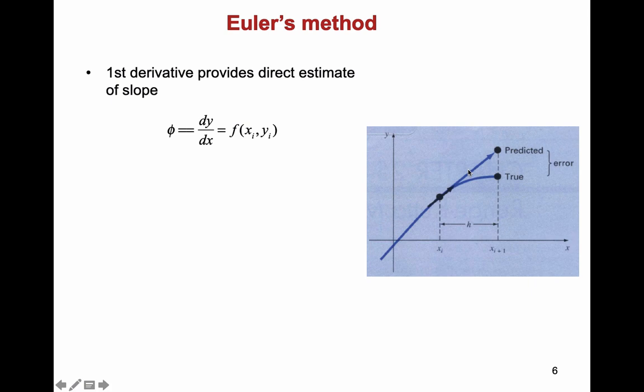And what happens to the error if I basically halve my step h? So my h is twice smaller. What happens to the error between the predicted value and the true value? It gets smaller as well, right? So with the smaller step, with the finer step, I'm going to get a better solution. That's, in general, the idea of numerical methods.